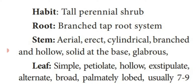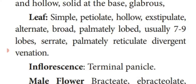Stem is glabrous and showy. Leaf: simple, stalk is present — petiolate, hollow. Stipules are absent — exstipulate. Arranged in alternate phyllotaxy. Very broad, palmately lobed — usually 7 or 9 lobes are present. The margin of the leaves is serrate. Palmately reticulate divergent venation.